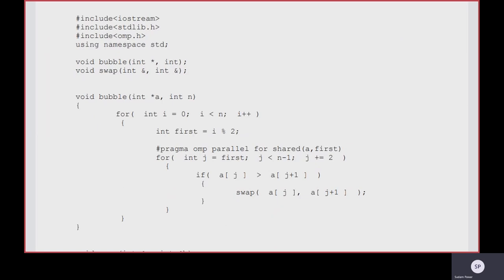The important statement here is: #pragma omp parallel for shared(a, first). The shared variable a is the array and first is the variable shared among the threads that will be created. Per virtual core, one thread will be created by default, because you are not explicitly mentioning the number of threads required to execute that particular section.